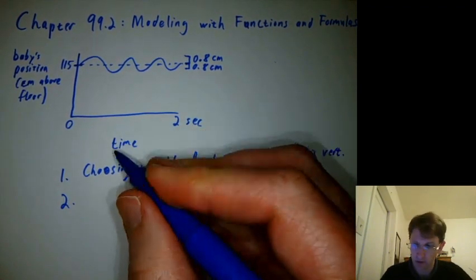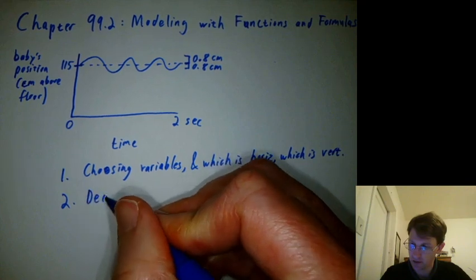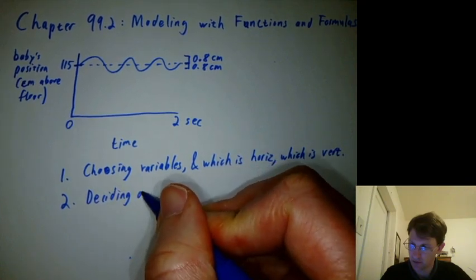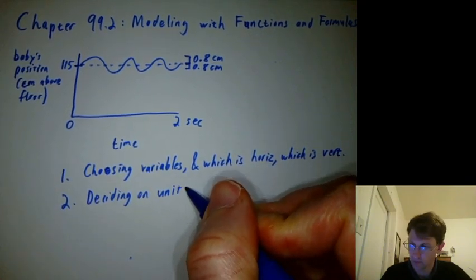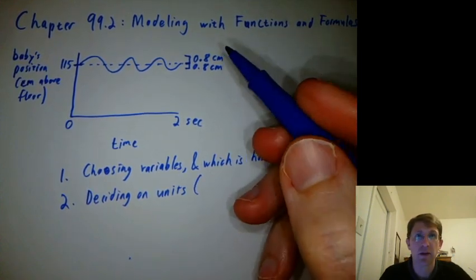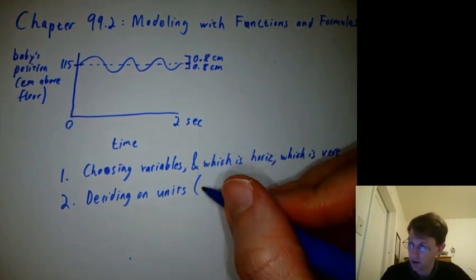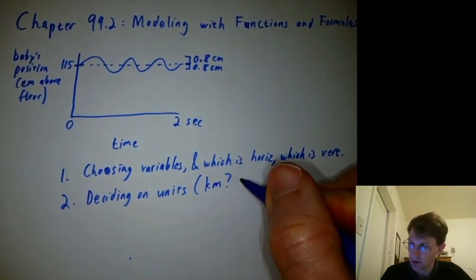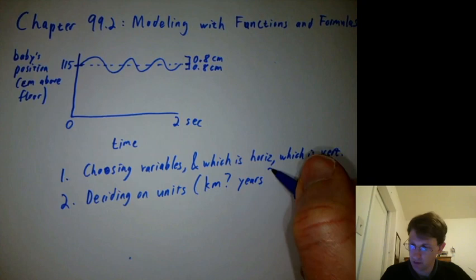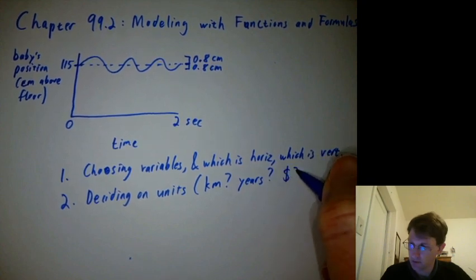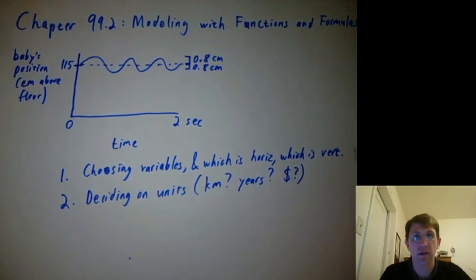Step two is deciding on units. You probably noticed I didn't choose kilometers here for my position and I didn't choose years for the time. So we usually just use whatever units kind of feel like they have the right size for the problem.